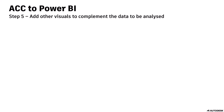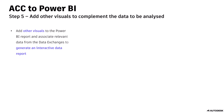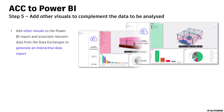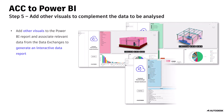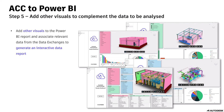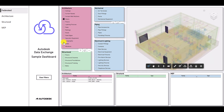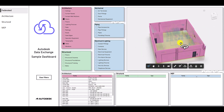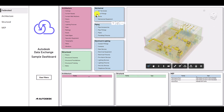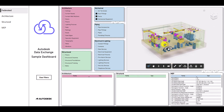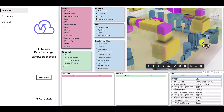Step 5: add other visuals to complement the data to be analyzed. Add other visuals to the Power BI report and associate relevant data from the data exchanges to generate an interactive data report. Publish the report to the web to share it with other stakeholders. And that's it. Let me know in the comments if you have any questions about the process. Don't forget to like and subscribe. Until next time — thank you.